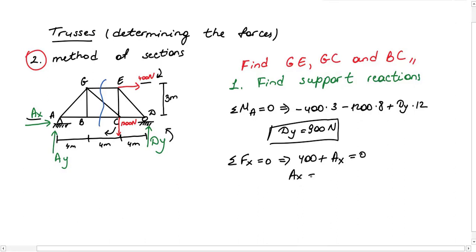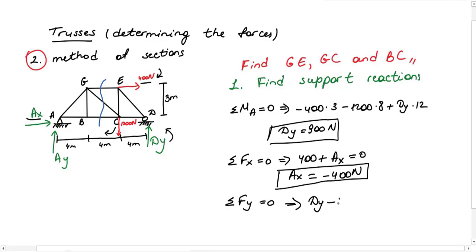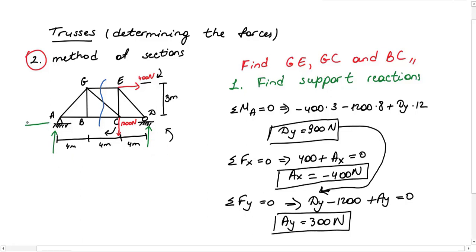For X direction we have positive 400 Newton and positive Ax. It is so simple to solve. I get minus 400 Newton for Ax. For total Fy, there are three forces in total: positive Dy, negative 1200, and positive Ay. I get Ay as 300 Newton from this equation. After finding support reactions, I'm gonna get rid of the minus sign if there is one and write support reactions down. So far so good.